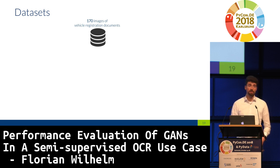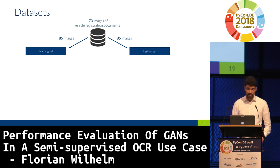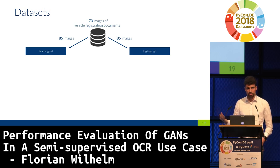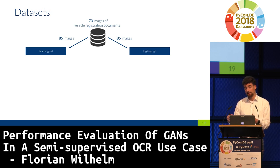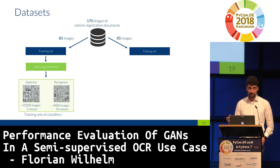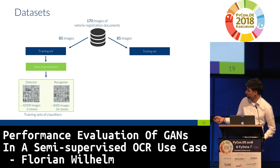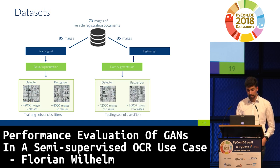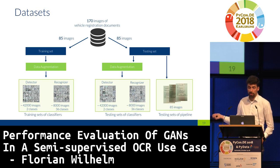In total, for our 170 vehicle registration documents, we split them 50-50 — normally you'd do 80-20, but we wanted a reasonably large test set. With 85 training images and data augmentation, we ended up with 42,000 images for the detector and 8,000 images for the recognizer, with equivalent test sets. Additionally, we kept the full images to later test the complete pipeline.